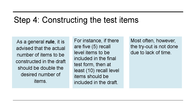Step 4 is constructing the test items. This is the actual construction of test items where you should consider what you have written in your table of specifications. There is a general rule that says it is advised that the actual number of items constructed in the draft should be double the desired number of items. For example, if you have 5 recall-level items to be included in the final test form, then at least 10 recall-level items should be included in the draft.